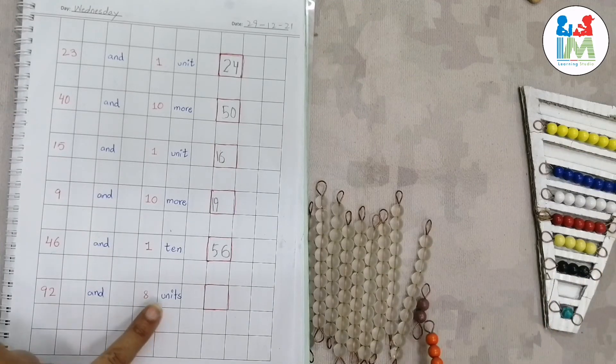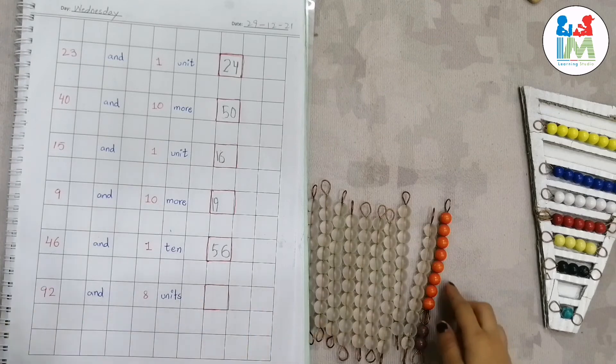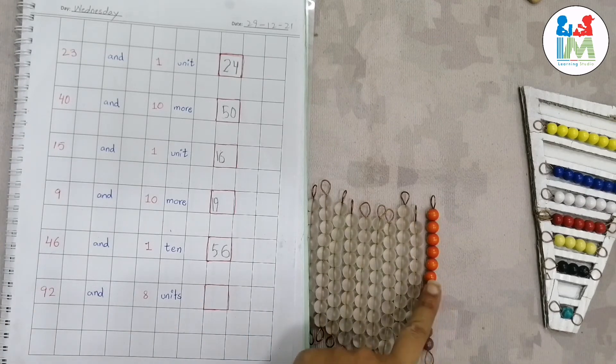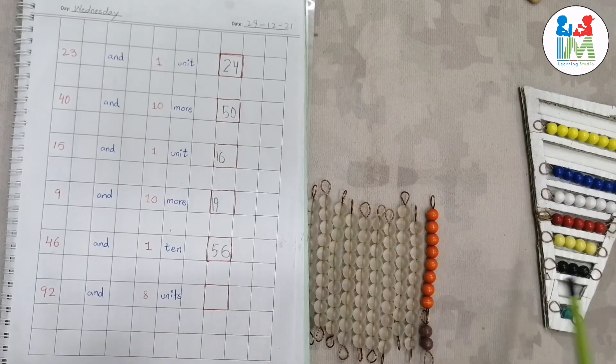Okay, and now what you have to add here? Eight. Eight units, good. How can you tell me what number here? 92. 92 and eight units make? Can you count? Okay.